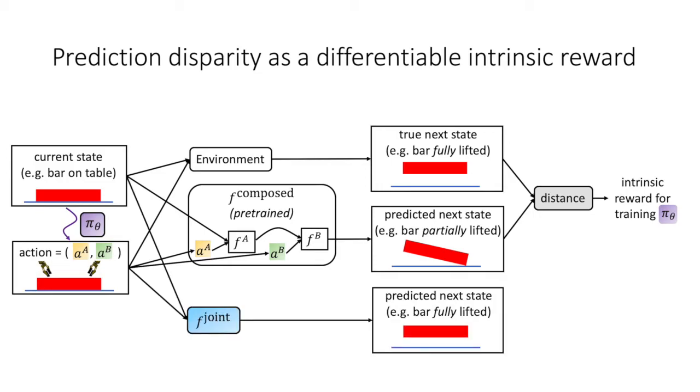Our next idea is to train a second model, F-joint, to predict state transitions on the complete multi-agent environment. In this example, it correctly predicts that the bar is fully lifted.